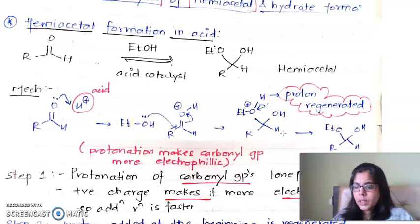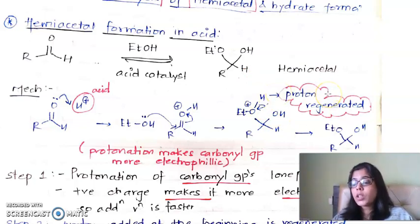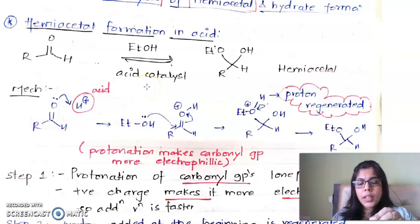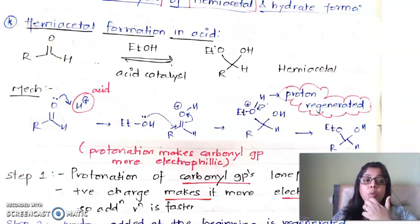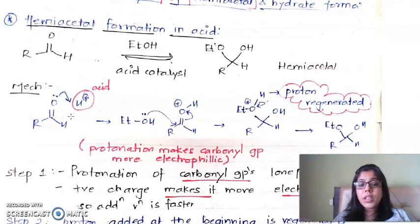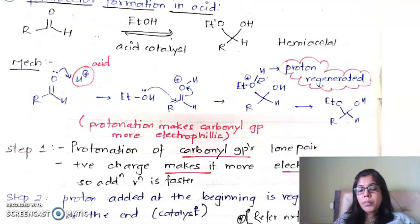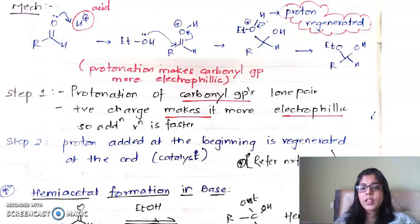The protonated aldehyde is attacked by the alcoholic oxygen and gives the same intermediate as before. The H⁺ is then lost back to the system and regenerated. This is what a catalyst does: it is used up in the reaction to increase the rate, then regenerated at the end. So acid catalysis works in two steps: step one — protonation makes the carbonyl group more electrophilic; step two — proton is regenerated.